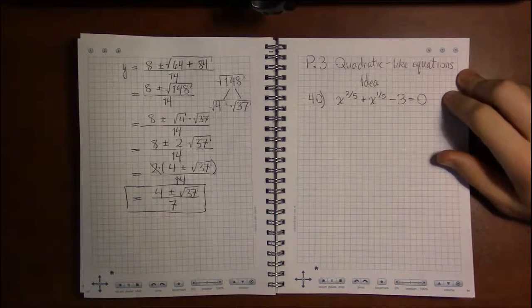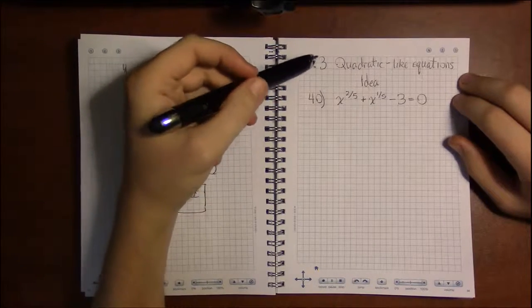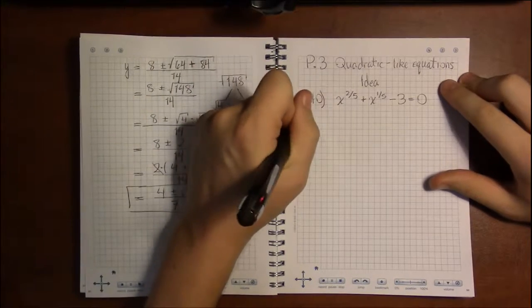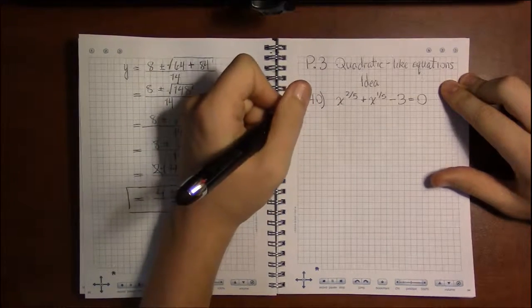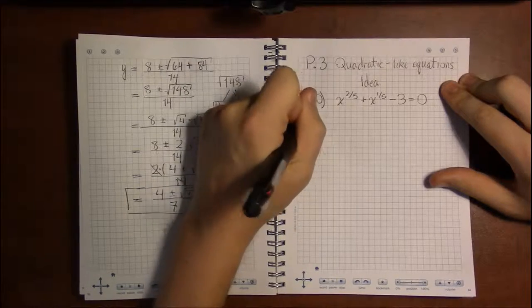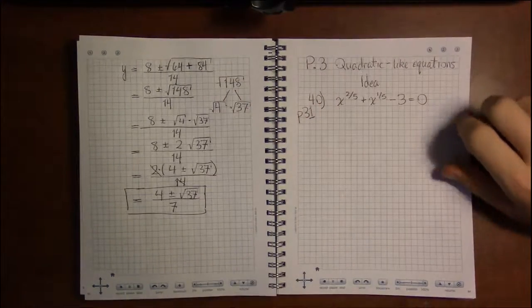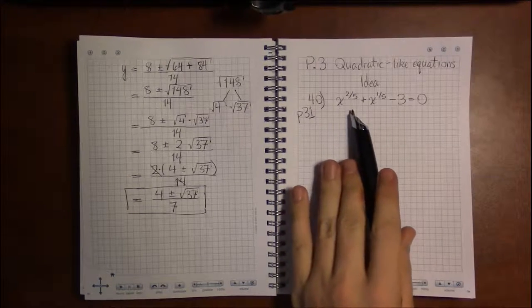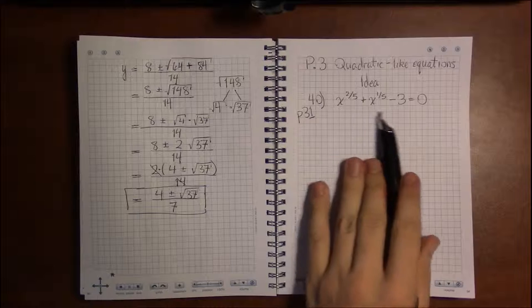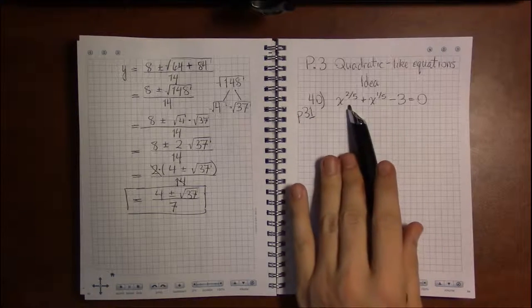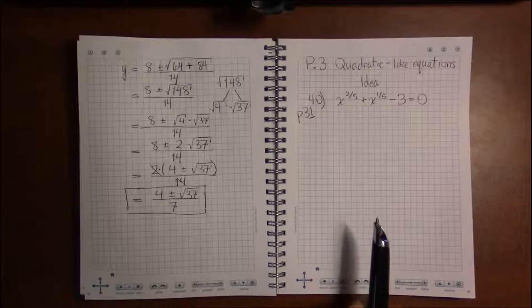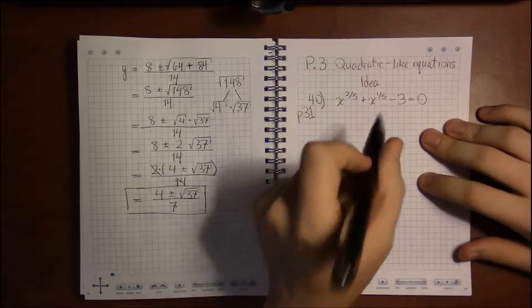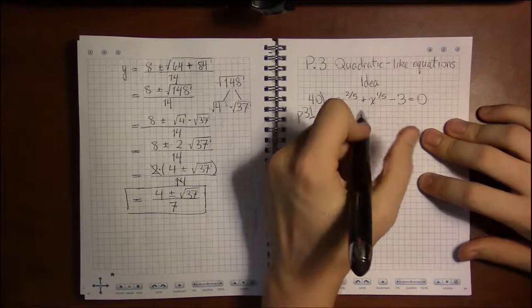All right, we also need to talk about quadratic-like equations from P3. Looking at problem 40 on page 31, and this in no way looks quadratic because where are the x squareds? Where are the x's? I've got these weird fifth powers. This is really ugly. But it turns out all it needs is a new look.